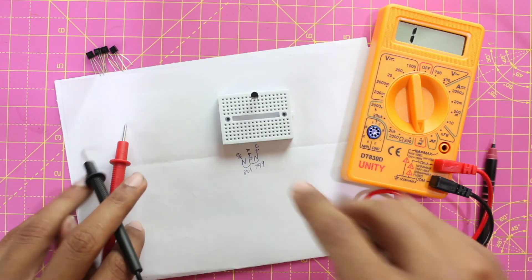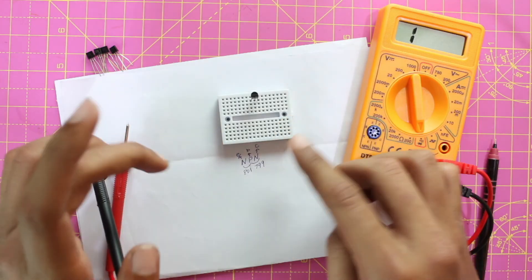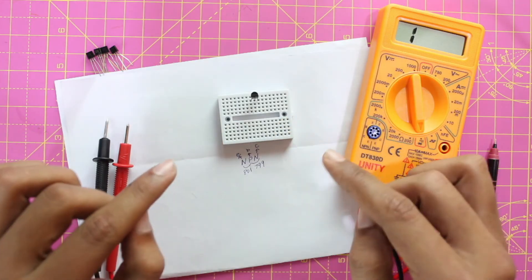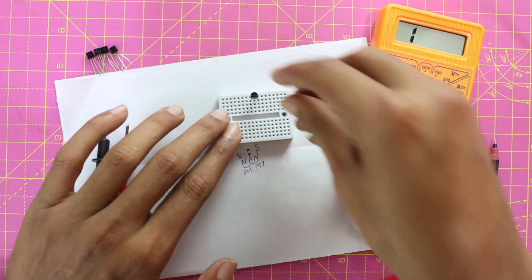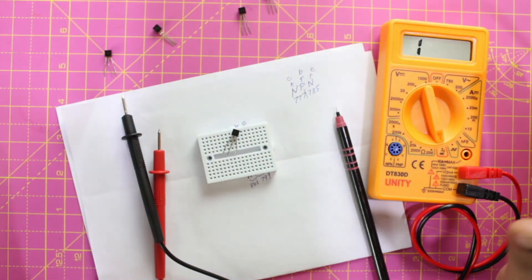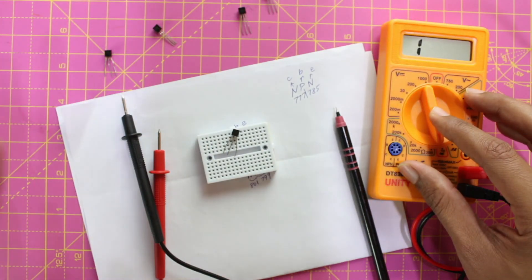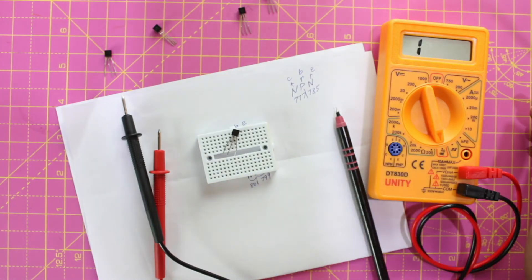So this is how you can find if a transistor is working, if it is an NPN or PNP transistor, and you can also tell the transistor's emitter, base, and collector pins. So that is it guys, this is how you can use a simple multimeter to check for all this on a transistor. Thank you for watching, have a nice day. Bye bye.